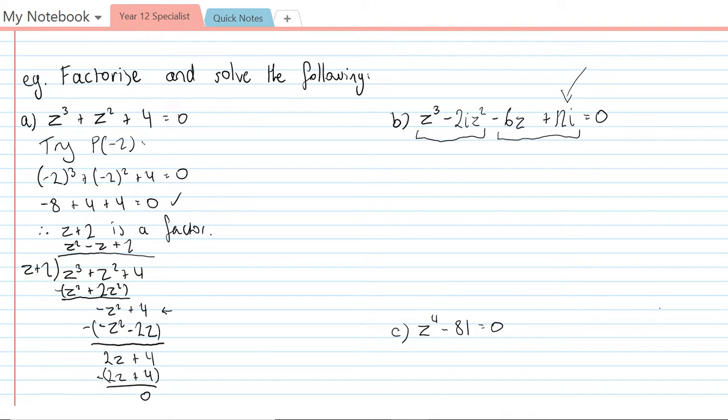So what we're going to do in this process is we're going to use the grouping method. This grouping method is typically used when we have polynomials with four terms. And what we can do is we can kind of break it into two parts and then try to find a common factor across each of those parts.